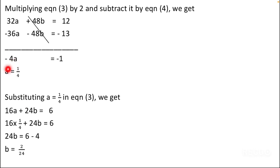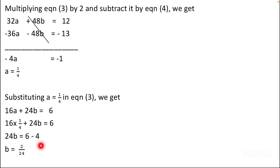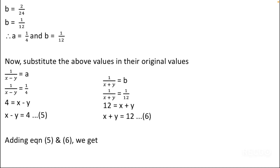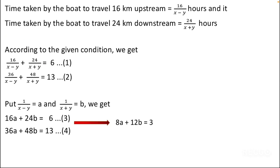Now we substitute a = 1/4 into equation 3: 16(1/4) + 24b = 6. This gives 4 + 24b = 6, so 24b = 2, and therefore b = 2/24 = 1/12. So our values are a = 1/4 and b = 1/12.